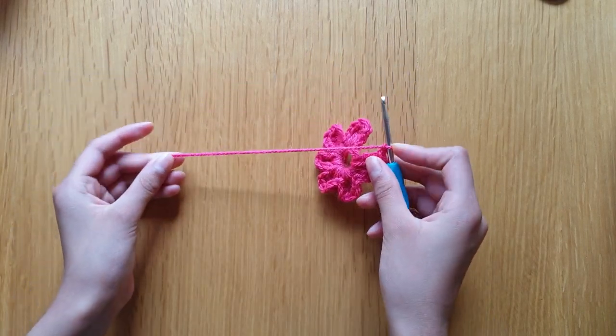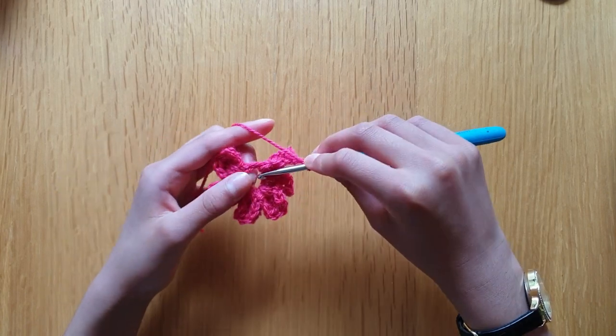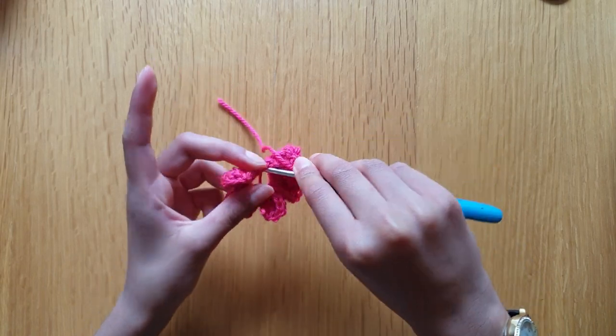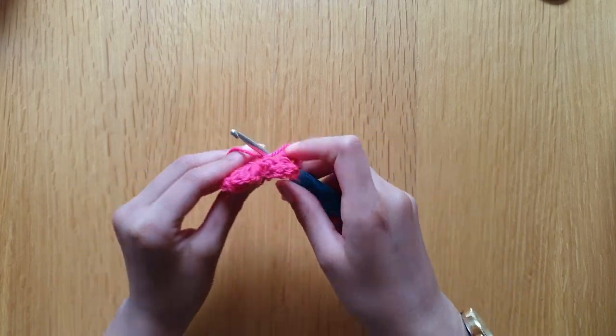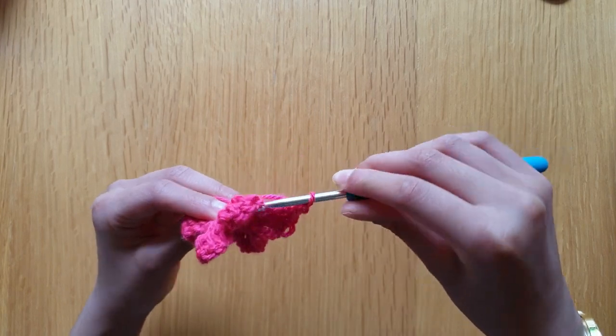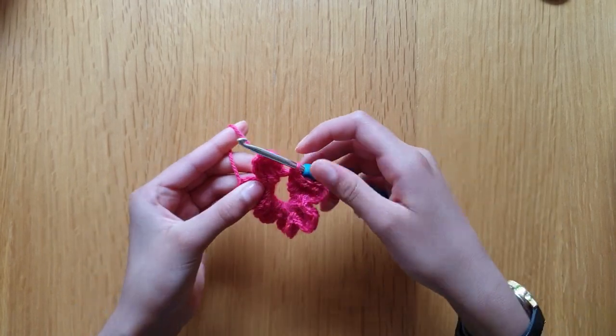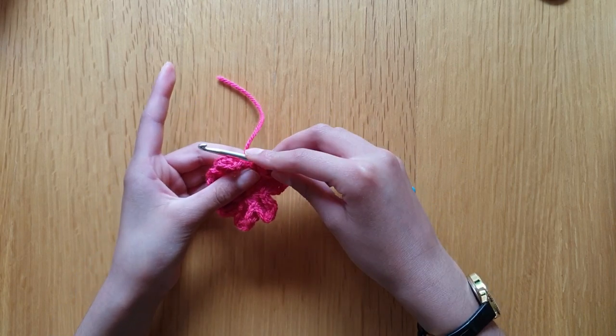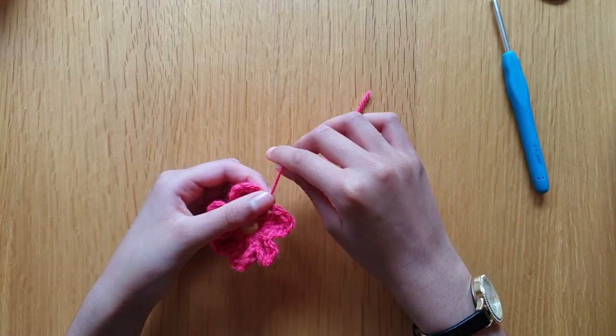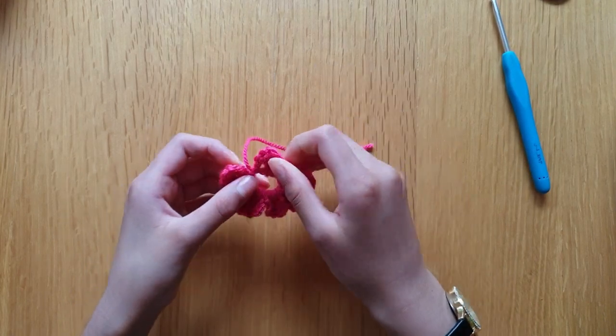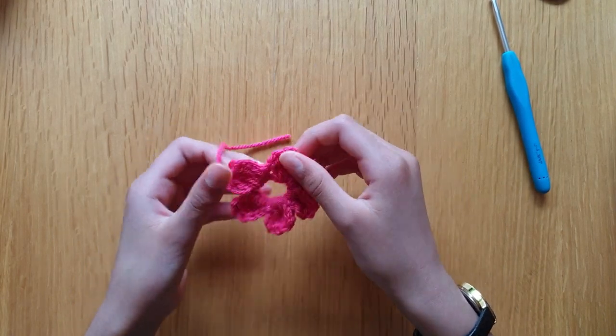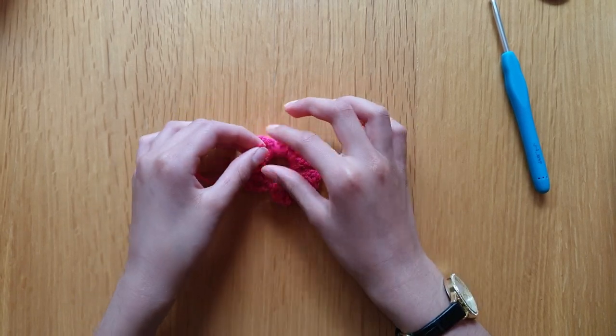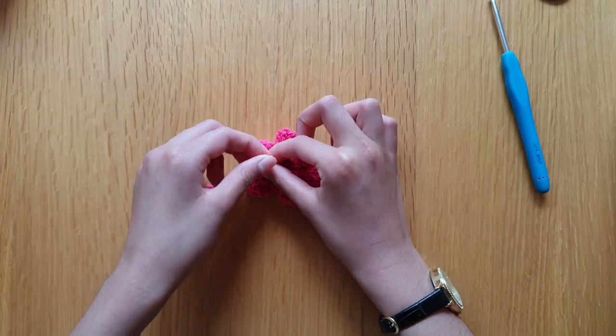What I'm gonna do now is I'm gonna do a slip stitch into here, like that. As you can see, pull the hook out, tug it. Then the tail end that we had at the back, we're gonna just tug that tight.